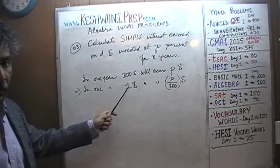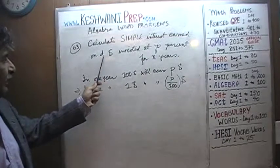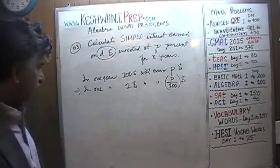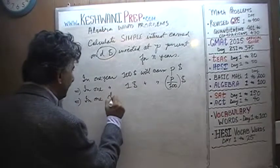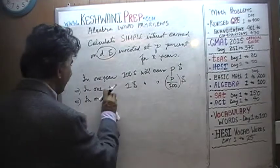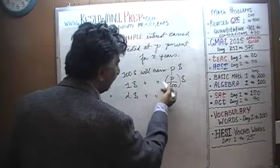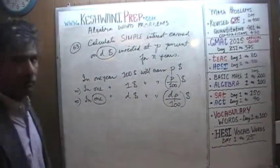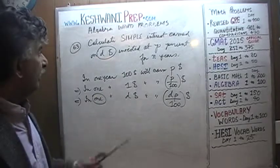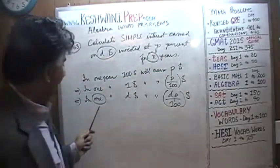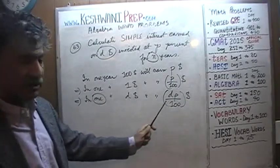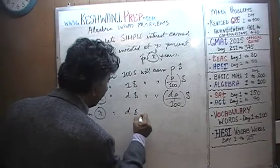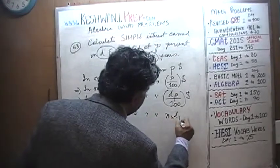Are we investing one hundred dollars? No. Are we investing a dollar? No, we're investing D dollars. So if one dollar earns P over 100 in interest, two dollars will earn twice as much and five dollars will earn five times as much. Therefore, in one year, D dollars will earn D times P over 100. But we're not investing for one year — we're investing for N years. So in N years, D dollars will earn N times D times P over 100.